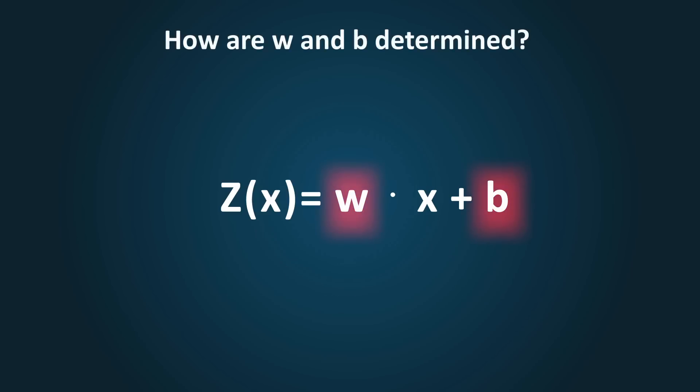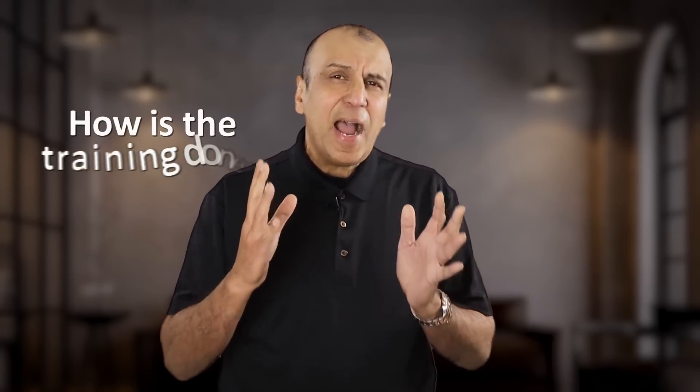How are w and b determined? This is where training, which is what I talked about in a prior video, comes in. We have to train the parameters w and b into the AI system, such that the input can be modified into the appropriate or correct output.